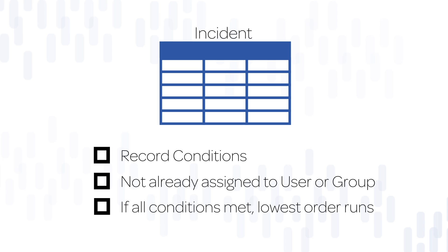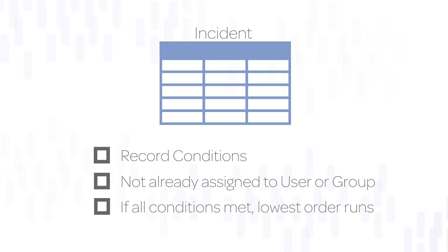If more than one assignment rule matches all conditions, only the rule with the lowest order value runs. We'll look at this concept in more detail later in the video.